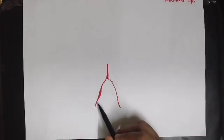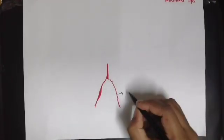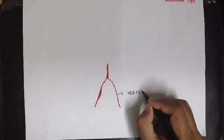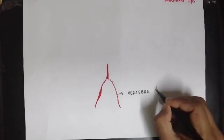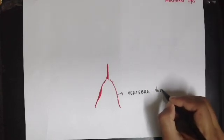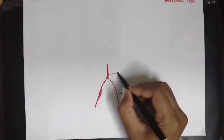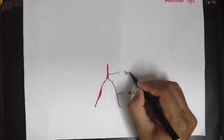So we are going to mark it now. These two are the two vertebral arteries, and the two vertebral arteries join together to form the basilar artery.